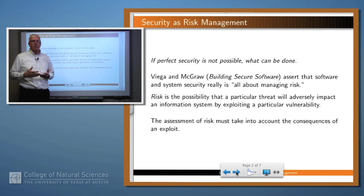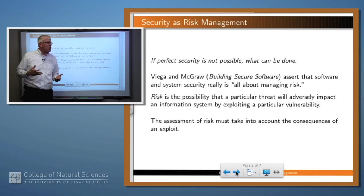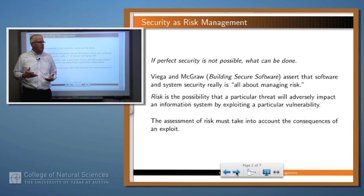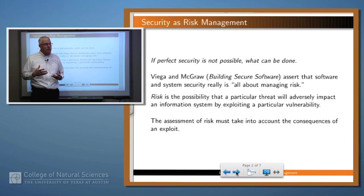What does that mean? Risk is the possibility that something bad will happen. In particular, here's a definition: the possibility that a particular threat will adversely affect an information system by exploiting a particular vulnerability. So if that's what security is about, then how do you figure out what the risks are for your particular system and how do you deal with them?